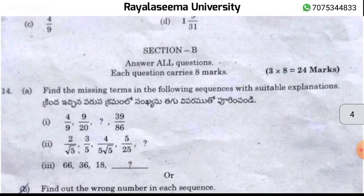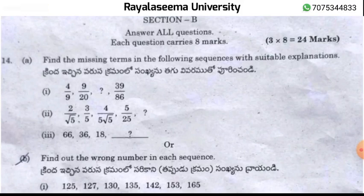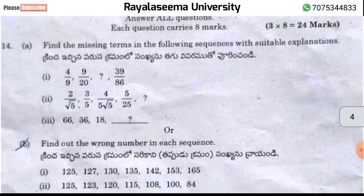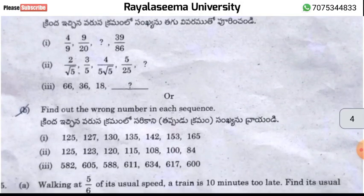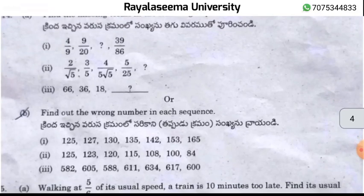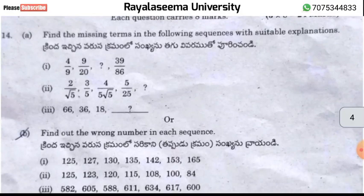Now Section B: we have 3 questions worth 8 marks each. We will answer all three. Check the solutions carefully — question number 14 is next.